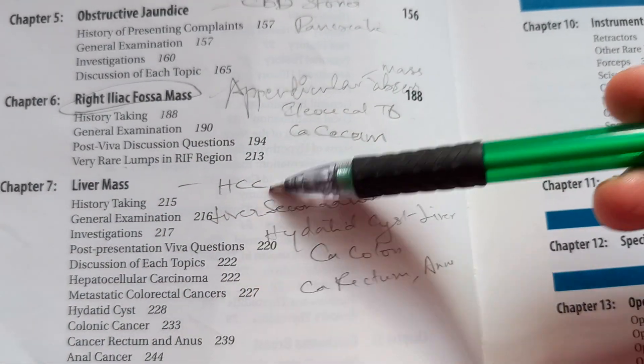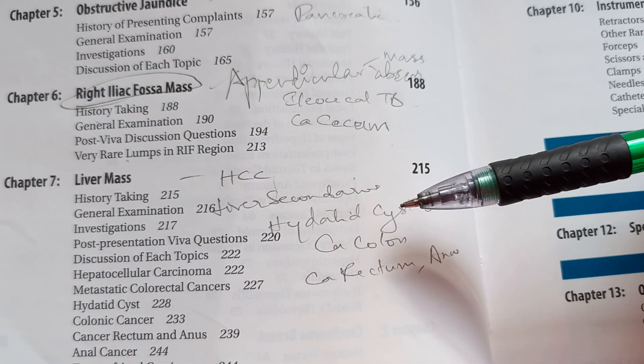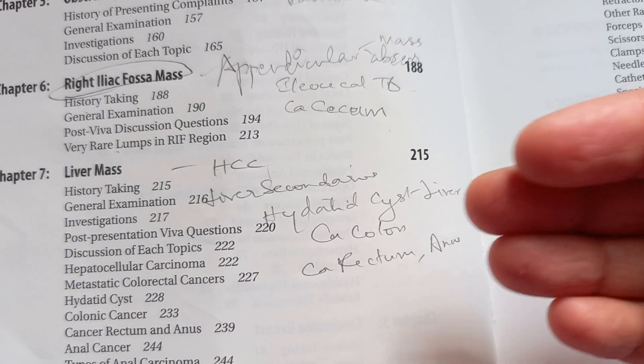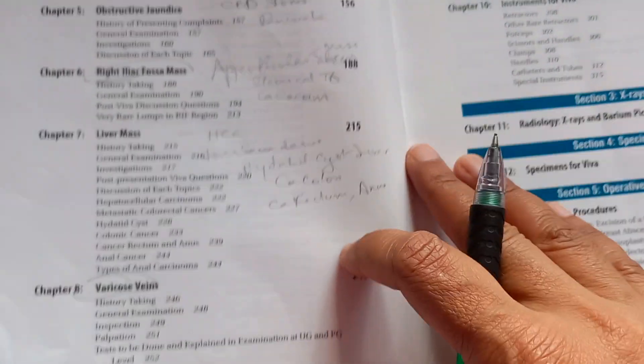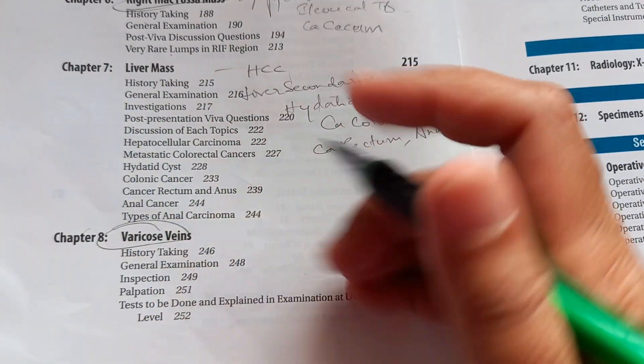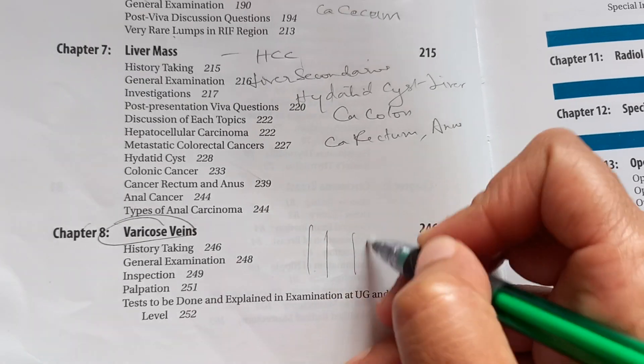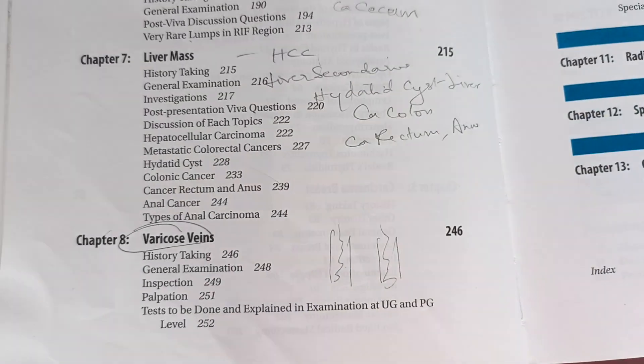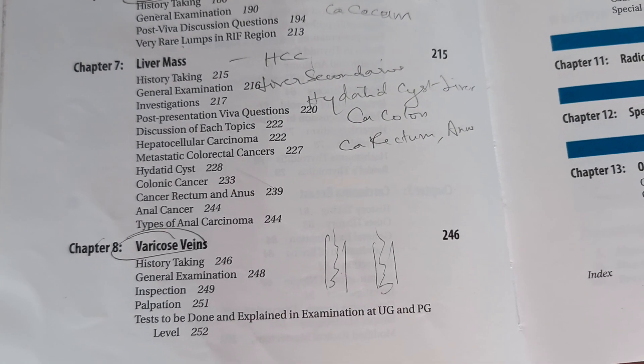Mass of the liver. Liver mass can be hepatocellular carcinoma, liver secondaries, hydatid cyst of liver, and it can be because of CA colon or CA rectum, anus, etc. So then coming to varicose veins, you would have seen a lot of patients by the time they walk in, you will know that in the leg, you can see superficial veins which are dilated, tortuous.